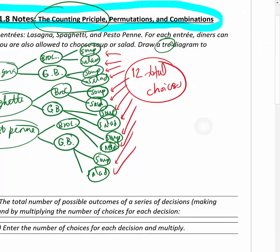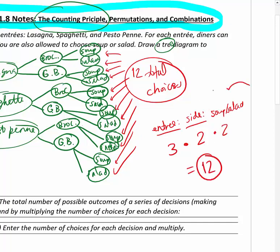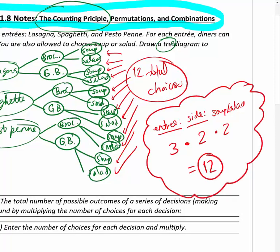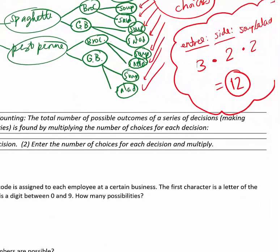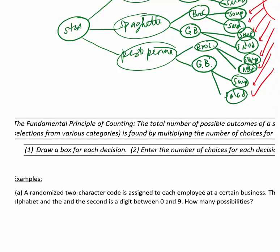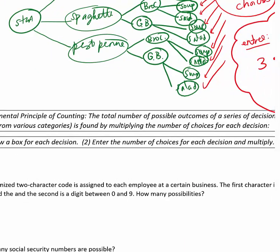With the counting principle, what we could have done is said there are three choices we made. For the entree, there were three choices. Multiply that by the number of choices for the side - there were two choices. Then multiply that by the number of choices for the soup or salad, which is two. So that's 12 choices. That's a reminder of why tree diagrams are useful.